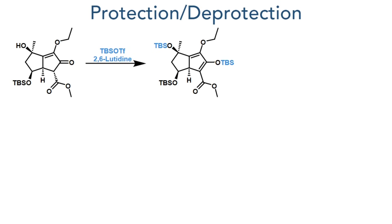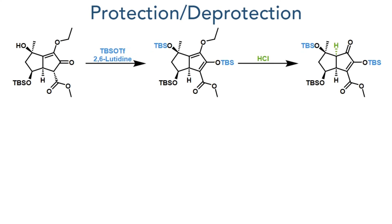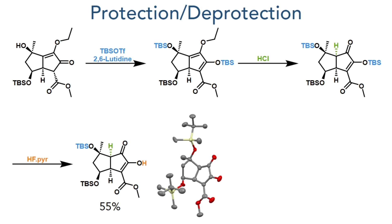With this in hand, they then had to construct a challenging enone-enol ester. To do this, the compound was first reacted with TBS triflate, which silylated the tertiary hydroxyl group together with the ketone to form a cyclopentadienyl silyl enol ether. Hydrochloric acid was then added to the reaction mixture to hydrolyze the ethoxy enol ether, and this was followed by HF and pyridine to selectively hydrolyze the TBS silyl enol ether. This formed the target compound in a 55% yield and its structure was confirmed using X-ray crystallography.